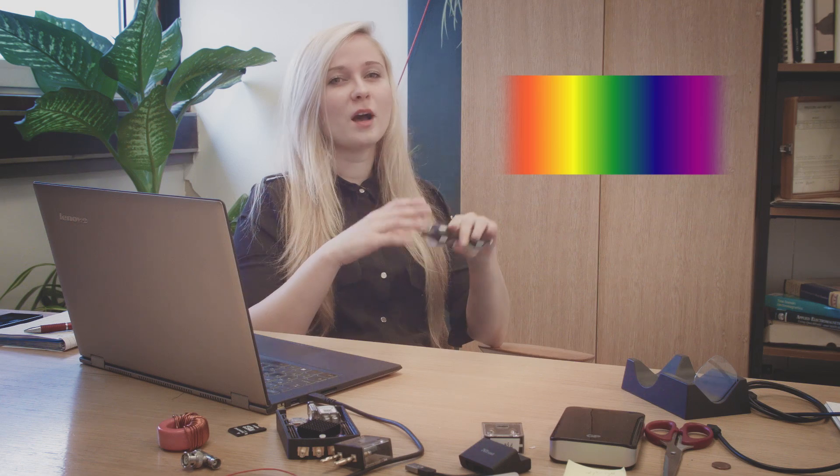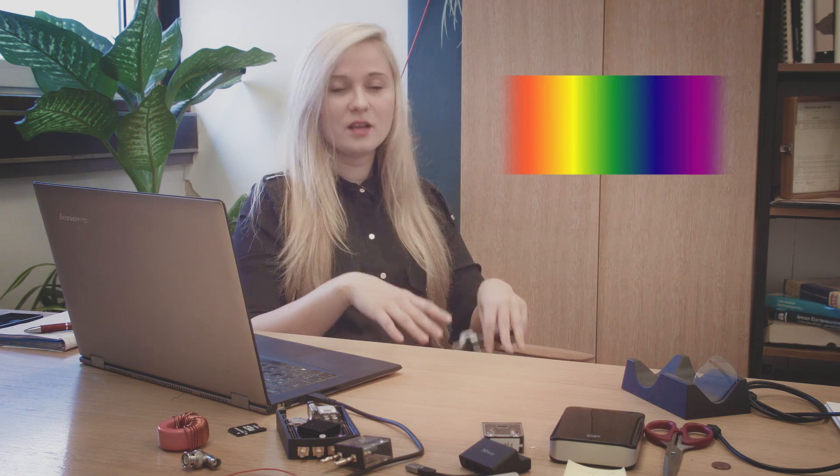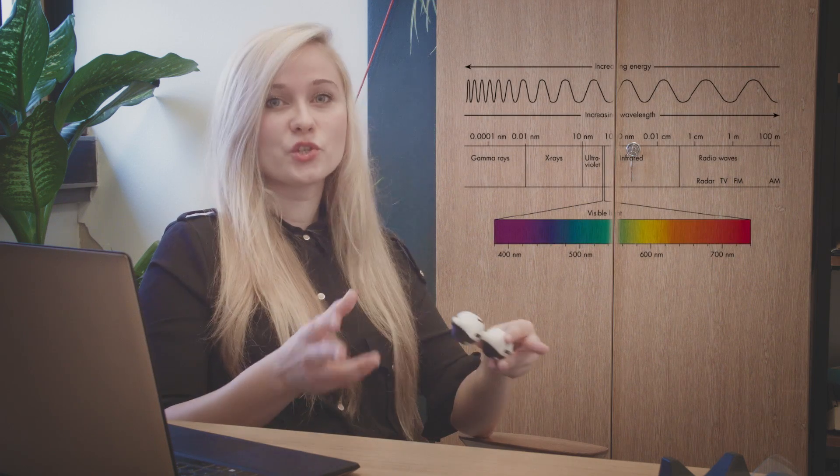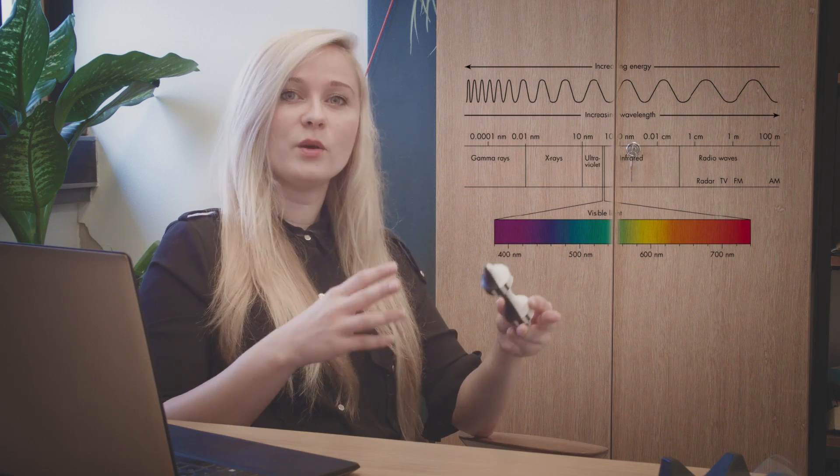When you look at the rainbow you will see a beautiful palette of colors, from violet across green to the red. Light and light colors are nothing more than a visible part of electromagnetic radiation which stretches from gamma to radio waves.